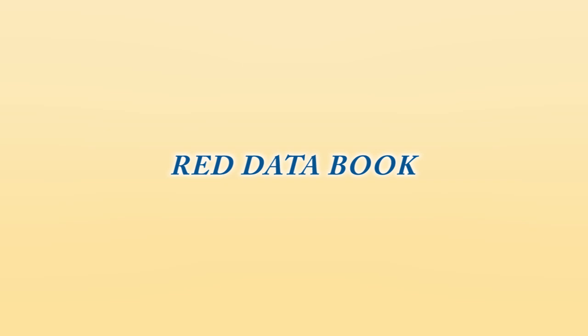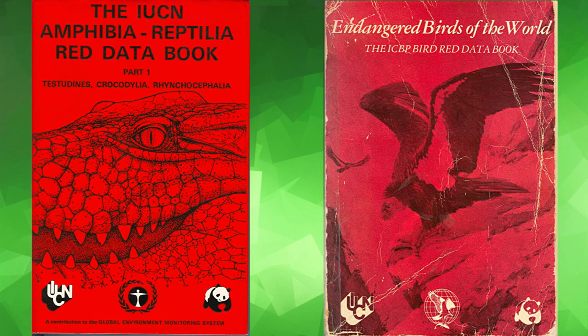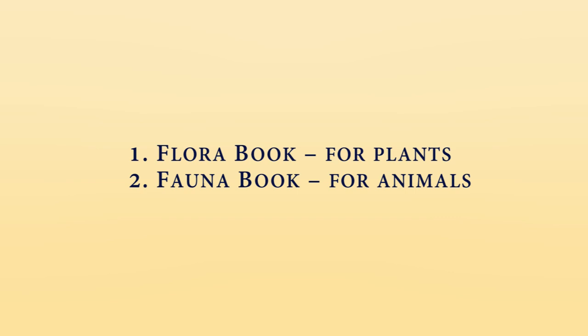Now let us discuss what is the Red Data Book. The Red Data Book, also known as the Red Book or Russian Red Data Book, is a state document established for documenting rare and endangered species of animals, plants, and fungi, as well as some local subspecies that exist within the territory. There are different Red Data Books for plants and animals — the Flora Book for plants and the Fauna Book for animals.